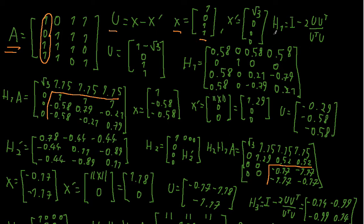This is the Householder formula: H1 equals the identity matrix minus 2 times u times u-transpose over u-transpose u. So now I can find my vector u, which is the first column vector of A minus x prime, giving me (1 − √3, 0, 1, 1).